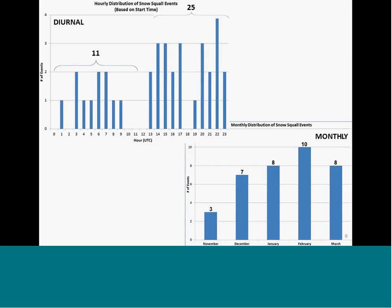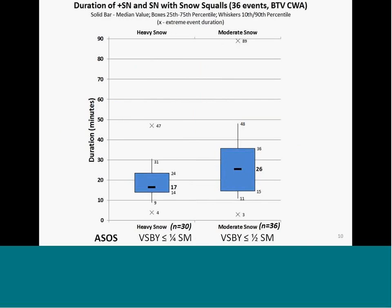In the monthly distribution, events are more or less evenly distributed across the winter season, with a peak in February of 10 cases. As to the duration of individual events, shown in box-and-whisker plots, the heavy snow typically lasted 17 minutes at the median, with the interquartile range — the middle 50% of the dataset — spanning 14 to 24 minutes. Moderate snow at the ASOS sites had a median duration of 26 minutes, with an interquartile range of 15 to 36 minutes, consistent with our subjective experience of squalls accompanying frontal boundaries.